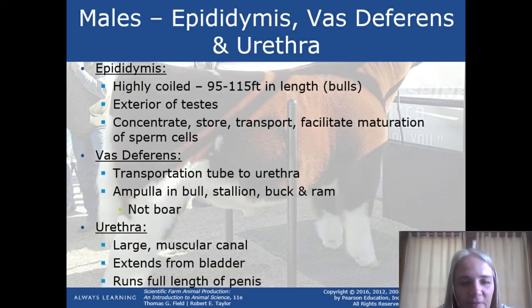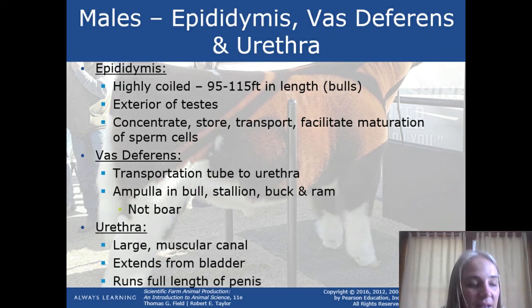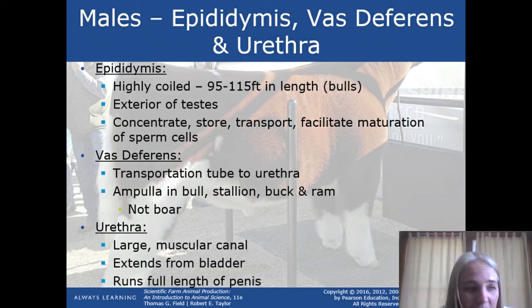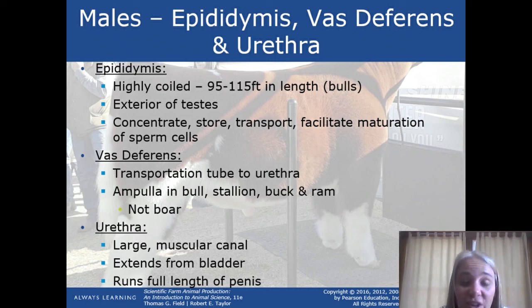The next organ is the epididymis. When sperm cells from the testicles pass from the seminiferous tubules, they go into the epididymis. It's highly coiled and held on the exterior of each testicle. Its functions are to concentrate, store, and transport sperm — and during that time, sperm also mature. In bulls, the epididymis is between 95 and 115 feet in length, giving you an idea of how much tubule is wrapped up there. In a sexually mature male, sperm reside in the epididymis in large numbers — some mature, some degenerate, and some reabsorb if not ejaculated.